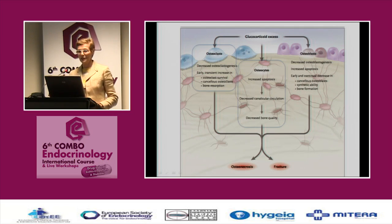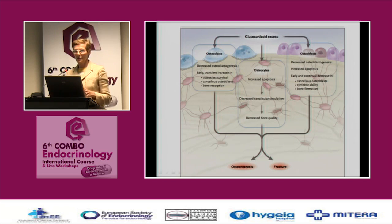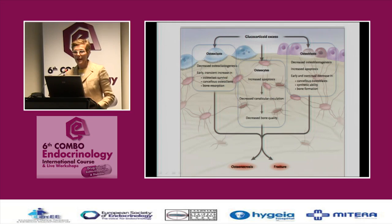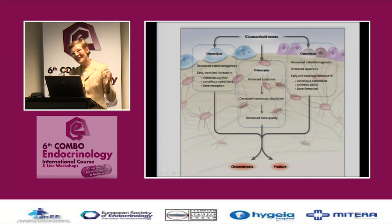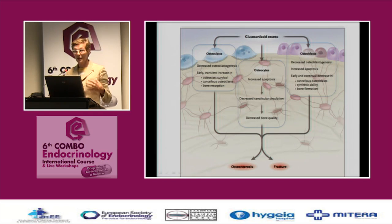Bone resorption is maintained, and the most important and long-lasting negative effect of glucocorticoids is on osteoblasts — bone-forming cells. Glucocorticoids decrease osteoblastogenesis, increase apoptosis of osteoblasts, and act especially on osteoblasts in cancellous trabecular bone. Synthetic ability is decreased and bone formation is suppressed all the time. In the first year, a person can lose 6% to 12% of bone mass, which is very high. In subsequent years, the person loses about 3% of bone mass per year.